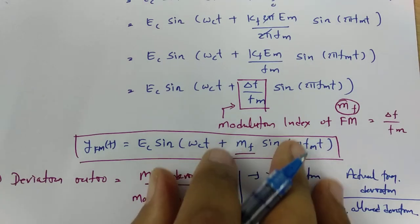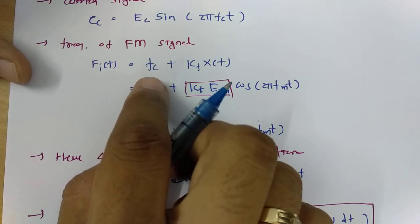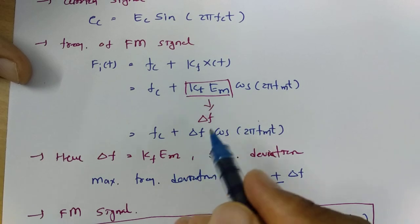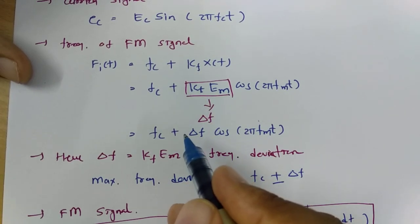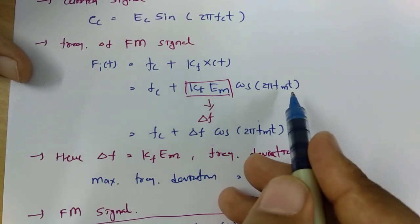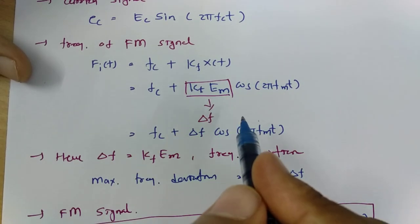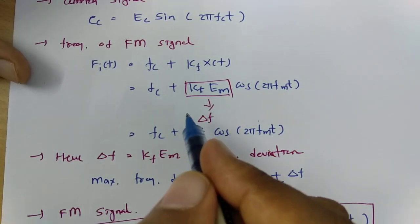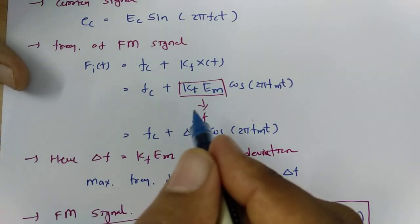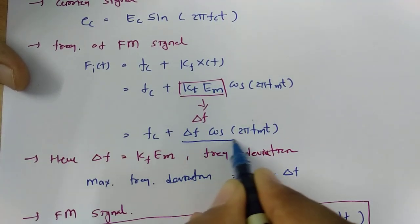The actual deviation occurs as per the function F(t) = Fc + Kf·Xt, where Xt is a time-varying function. So the maximum deviation is Kf into Em, which is delta f. The actual deviation varies with time as cos(2π fm t). Based on the modulating signal, we will have the actual deviation, and the maximum deviation is frequency sensitivity into Em, which is delta f. This is how frequency deviation varies with respect to time.